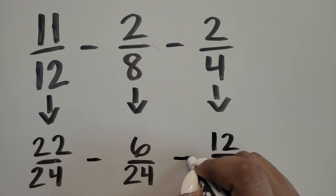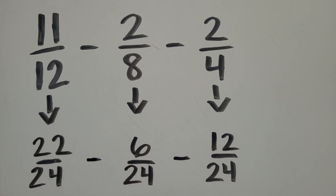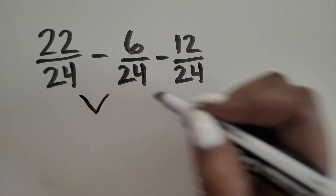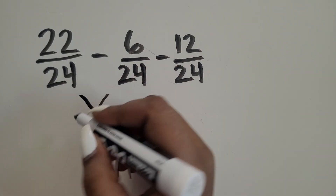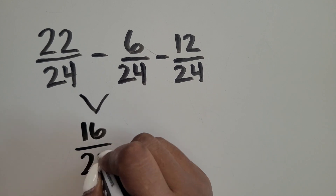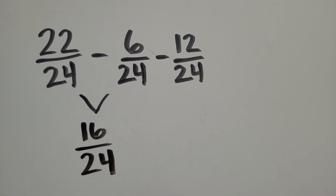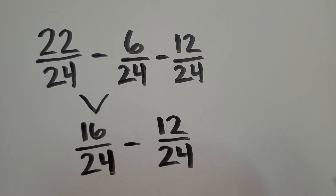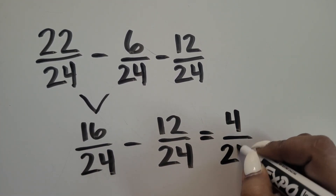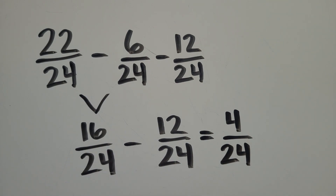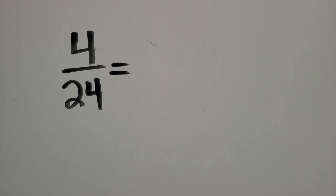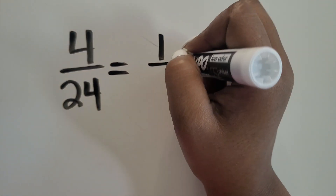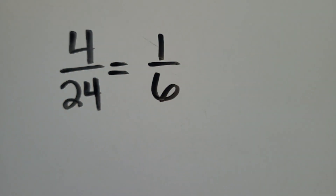We can subtract now that the denominators are alike or the same. 22 twenty-fourths minus 6 twenty-fourths equals 16 twenty-fourths. 16 twenty-fourths minus 12 twenty-fourths equals 4 twenty-fourths. The difference of the fractions is 4 twenty-fourths. An extra step can be to simplify this fraction. To learn how to do this, watch my video on simplifying fractions.